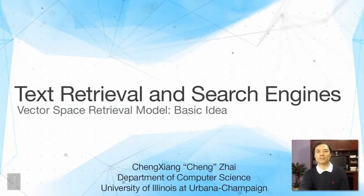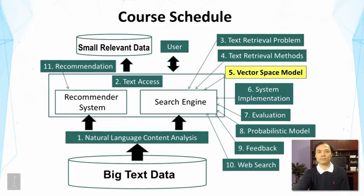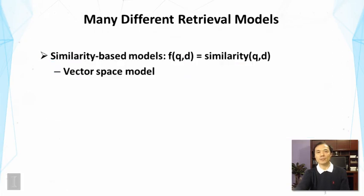This lecture is about the vector space retrieval model. We're going to give an introduction to its basic idea. In the last lecture, we talked about different ways of designing a retrieval model, which would give us a different ranking function. In this lecture, we're going to talk about the specific way of designing a ranking function called a vector space retrieval model, and we're going to give a brief introduction to the basic idea.